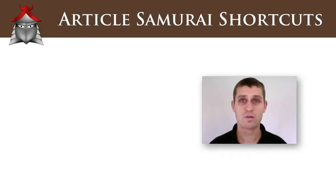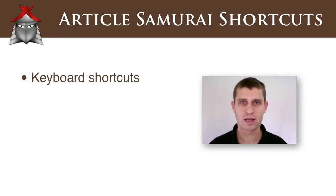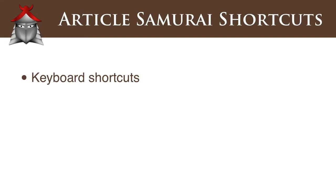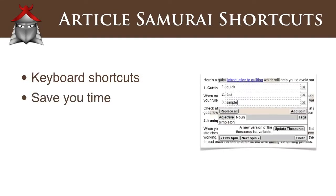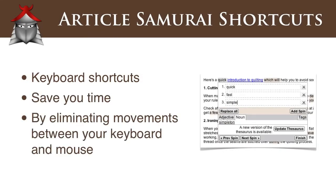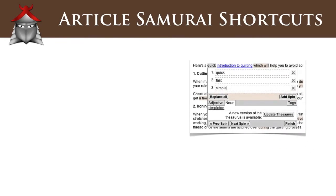In order to make the process of reviewing your articles for submission easier, Article Samurai has a number of keyboard shortcuts that allow you to interact with spin blocks without needing to use your mouse. This can save you time on each article review by eliminating the need to constantly move your hand between your keyboard and mouse. In this video, we'll take a look at how to best use the keyboard shortcuts to reduce the time it takes to review an article.